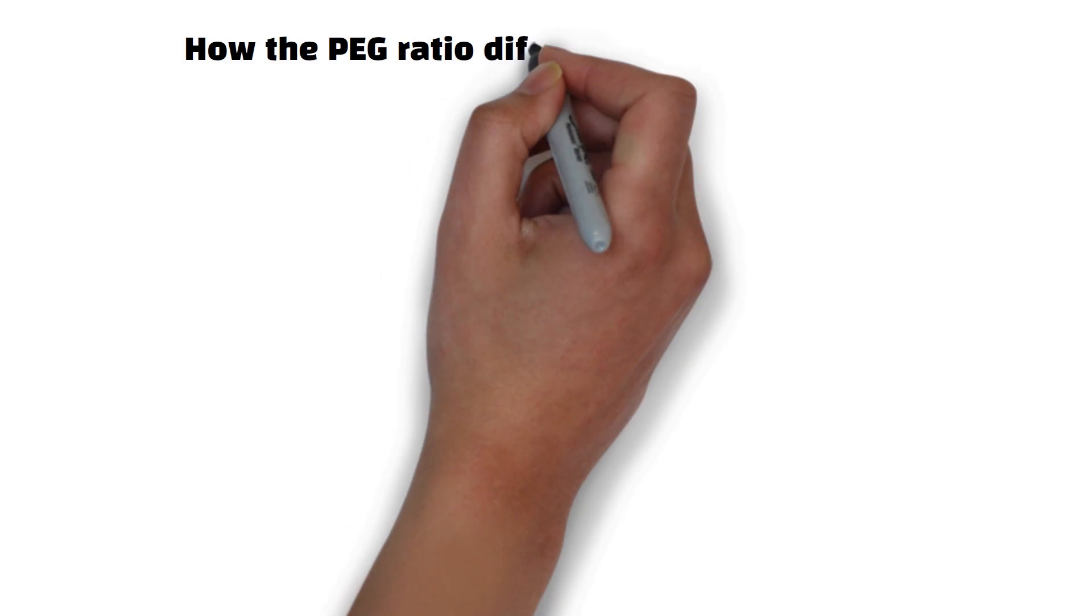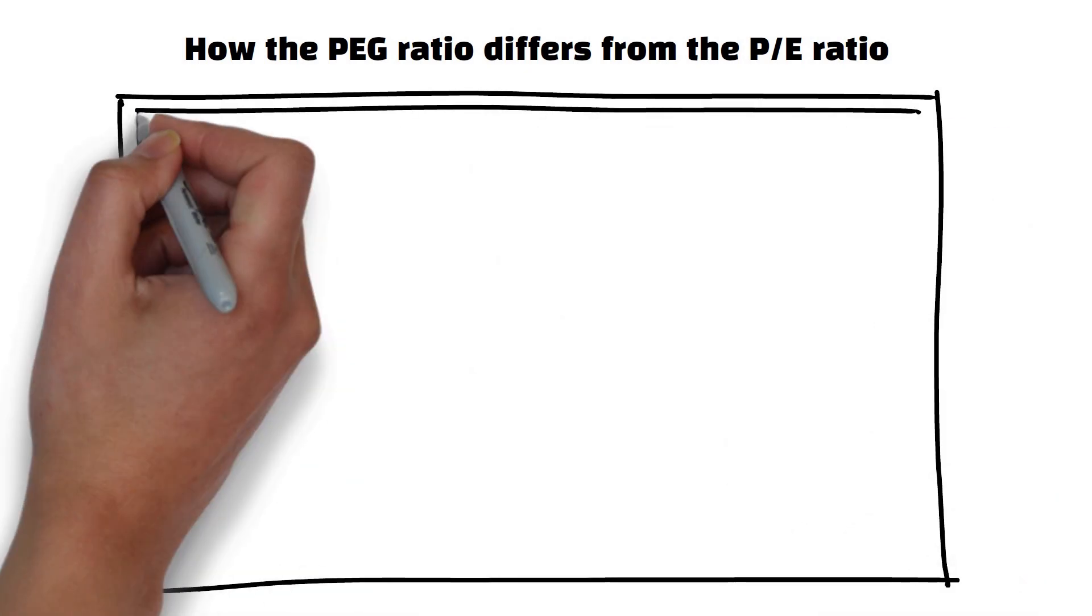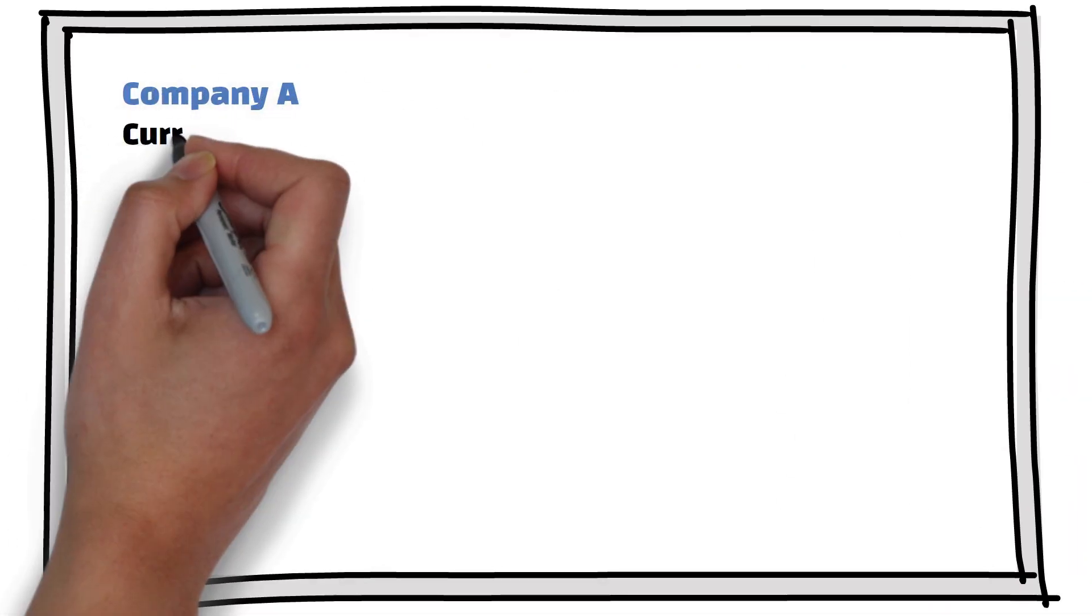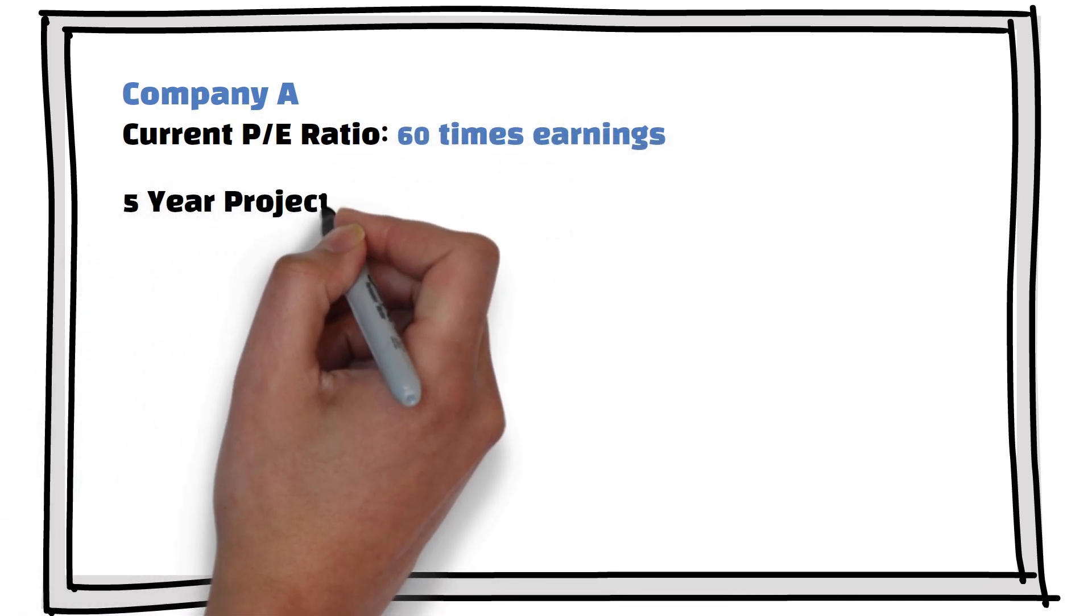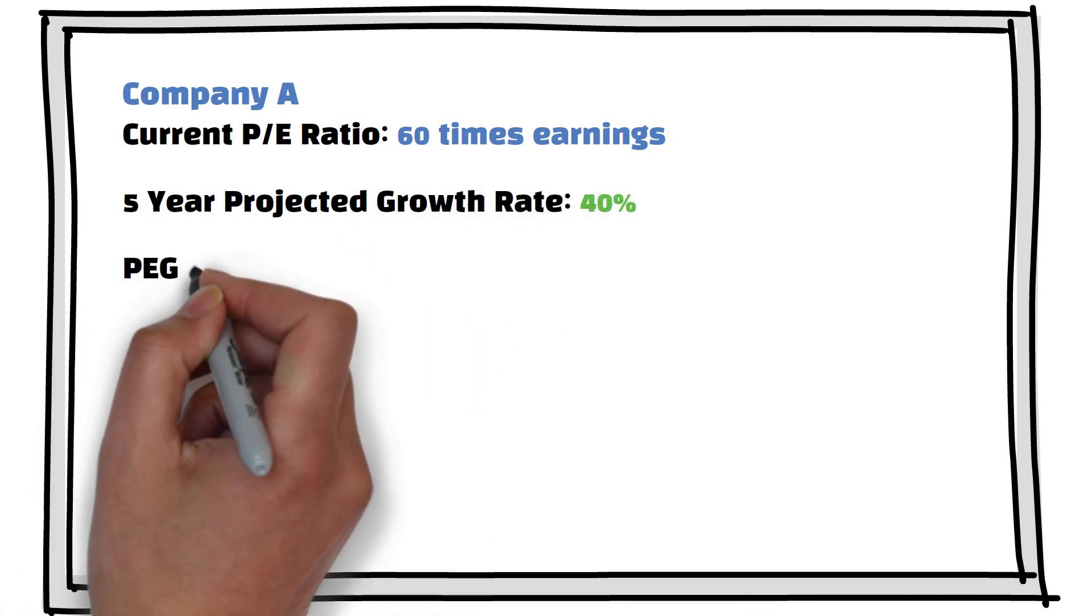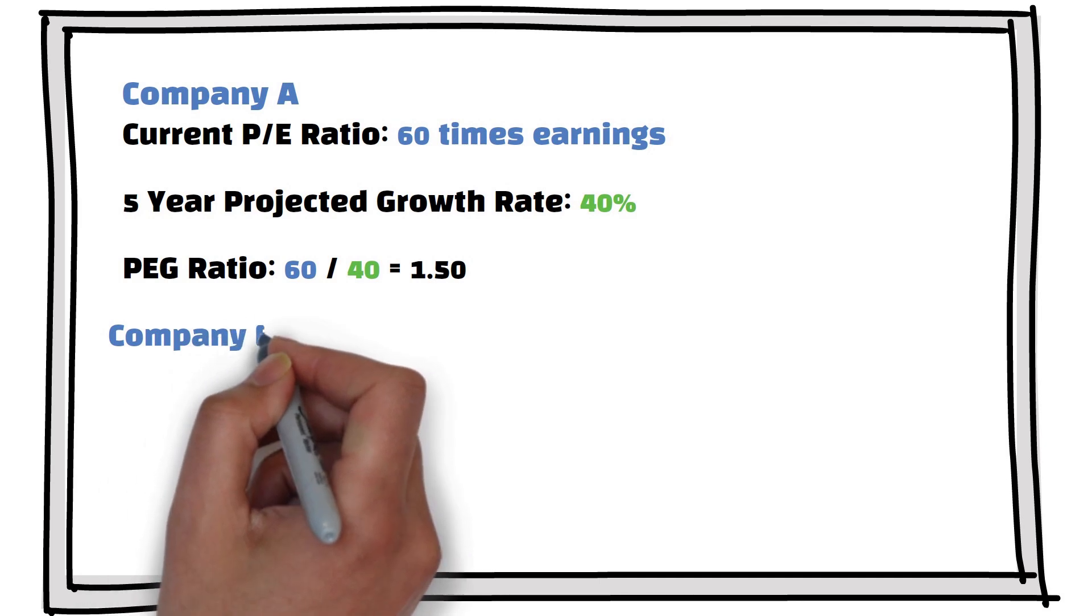Let me give you an example to better illustrate how the P-E-G ratio differs from the P-E ratio. Let's compare two companies, A and B. Company A, current P-E ratio 60 times earnings, 5-year projected growth rate 40%, P-E-G ratio 60 over 40 equals 1.50.